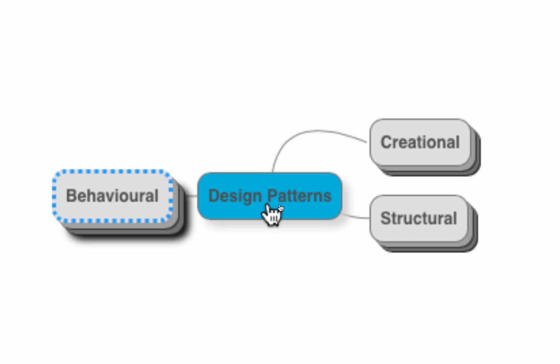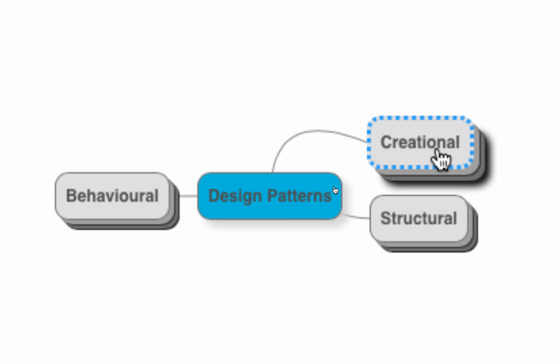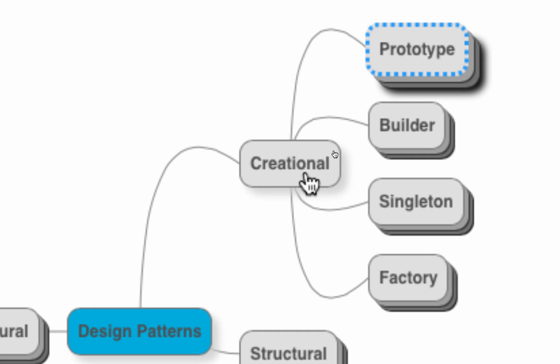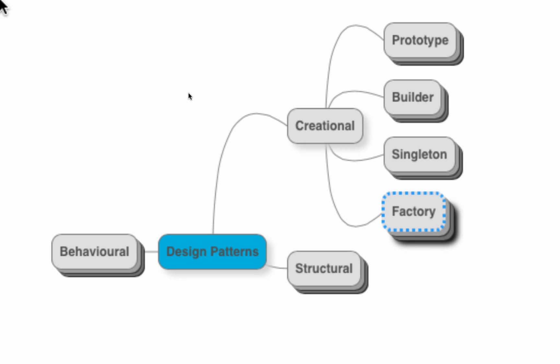We would use real-world scenarios like this to understand all the design patterns. Creational design patterns deal with the creation of objects — how you can efficiently create objects. The most important creational design patterns are prototype, builder, singleton, and factory, which has multiple variations such as abstract factory and factory method.